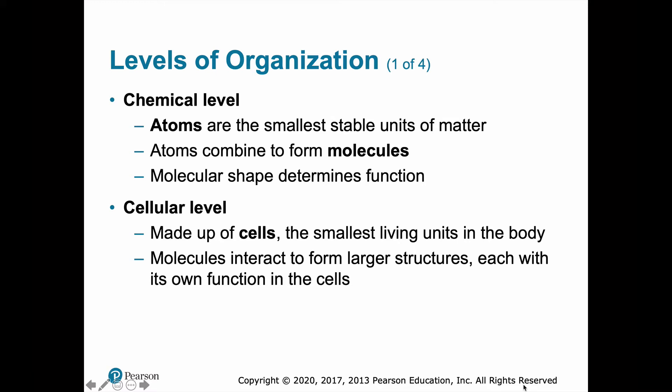All living things are made of cells — at least one cell. Even the simplest organisms are made of one cell, and of course those cells have parts. The subcomponents of a cell are made of chemicals. Starting at the very bottom level of all matter, we're dealing with the atomic level. Atoms are the smallest stable units of matter, and atoms join together via chemical bonds to form molecules. Those molecules can interact with other molecules to make macromolecules, which are the building blocks of the parts of a cell.